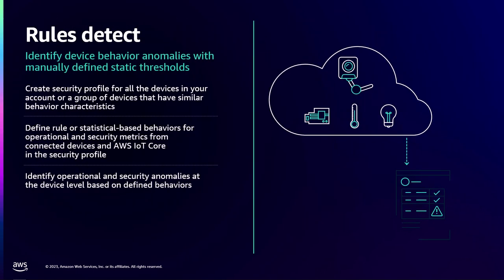Let's look at detect. With detect, what we're doing is essentially monitoring the device behavior. You can set up a rule that defines what the normal behavior is. For example, is your device having multiple connection attempts, or is the device sending an excessive amount of data to AWS? These kinds of anomalies can be picked up with AWS IoT Device Defender Detect. With rules detect, you're essentially setting up a security profile which defines the normal device behavior for your devices.